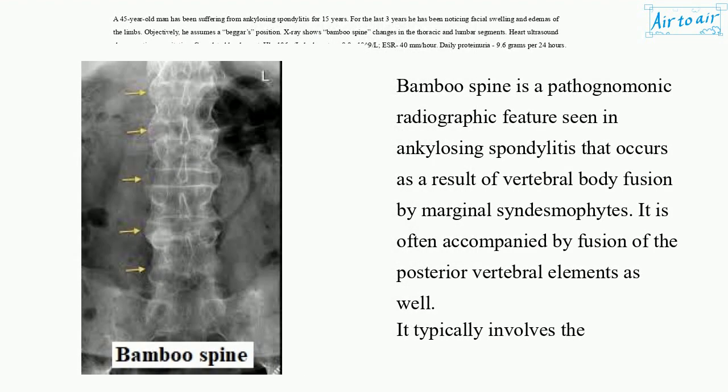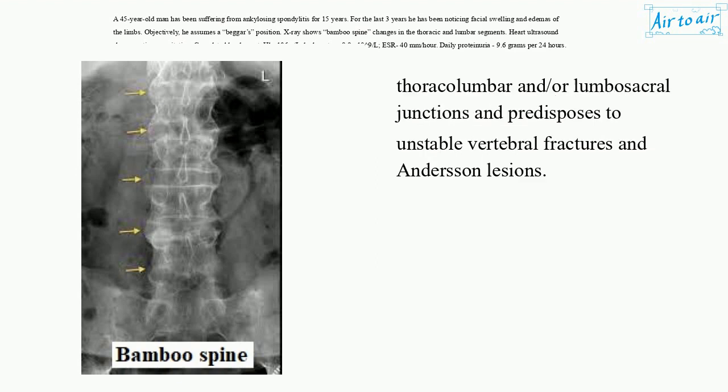Bamboo spine is a pathognomonic radiographic feature seen in ankylosing spondylitis that occurs as a result of vertebral body fusion by marginal syndesmophytes. It is often accompanied by fusion of the posterior vertebral elements as well. It typically involves the thoracolumbar and/or lumbosacral junctions and predisposes to unstable vertebral fractures and Anderson lesions.